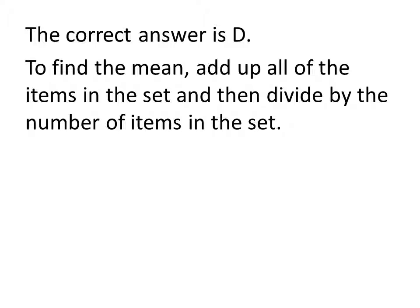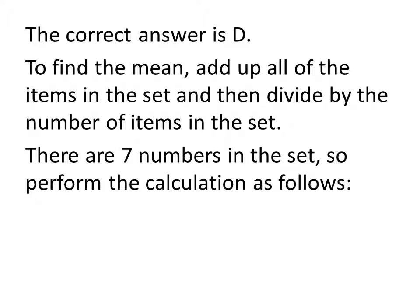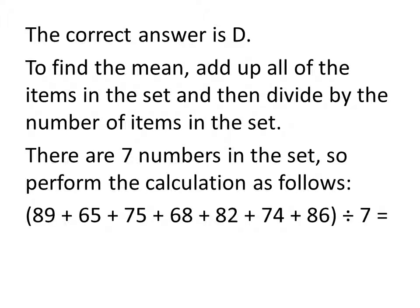Let's have a look at our calculation. There are 7 numbers in the set, so we need to do the calculation as follows. We set up the equation, we add up all of the 7 numbers, and we divide those by 7. Adding those 7 figures together, we get 539, and when we divide this by 7, we get 77 for our solution.